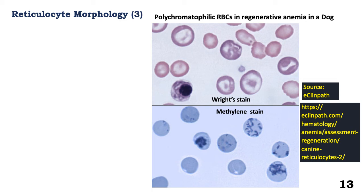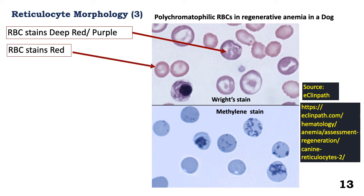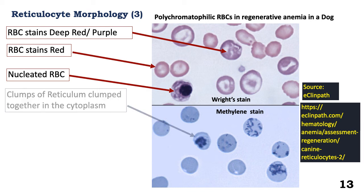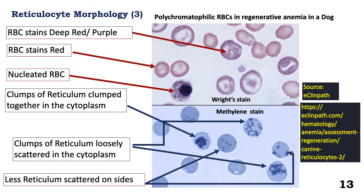Let's look again at the morphology we've just described. This red blood cell is large and staining deep purple — it's a polychromatic red blood cell. When you compare it to the smaller one that stains red, that's a normal red blood cell. This red blood cell is nucleated. This panel was stained with Romanowsky stains, specifically Wright's stain. The panel below stained with methyl blue brings out the reticulum in the reticulocytes — the reticulum clamped together, loosely scattered, and lastly appearing on the periphery in lesser quantity.